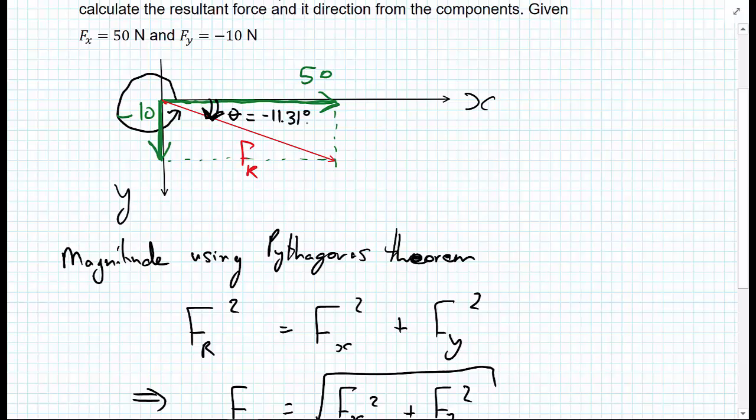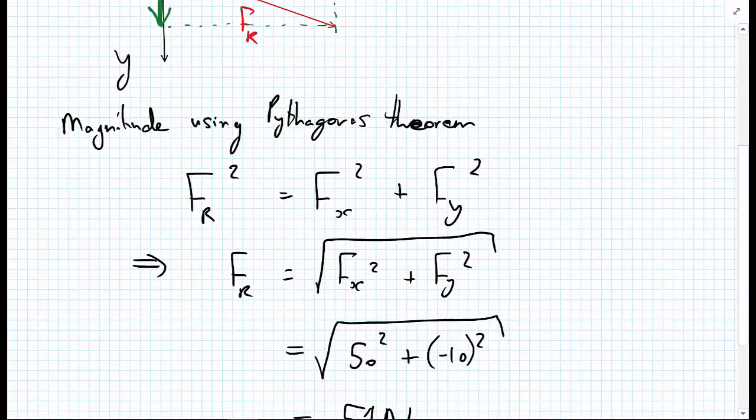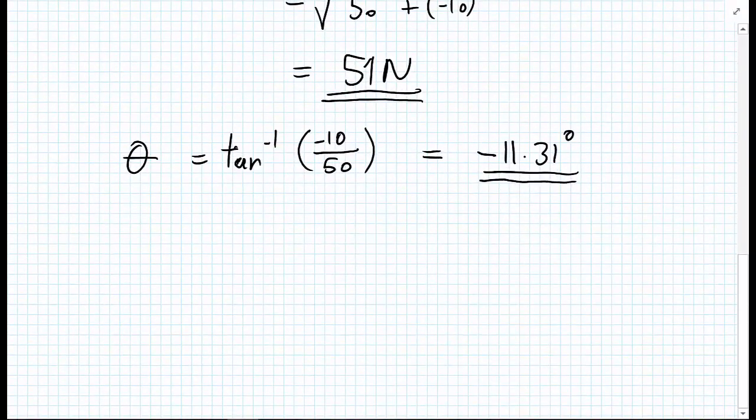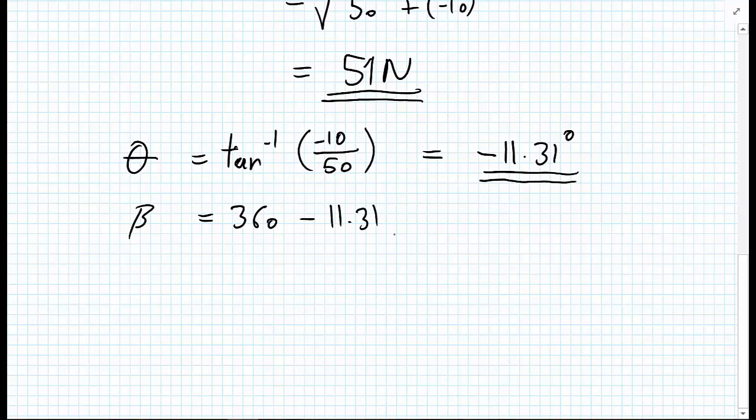Or alternatively, as we've said, we could measure that in the positive, the anti-clockwise direction from the x-axis going around. Then the value would be, and let's call this value beta, that equals 360 degrees minus 11.31 degrees. That would give us an alternative way of registering the angle of 348.7 degrees.